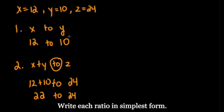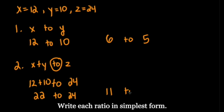In ratios, although you might get your answer, it doesn't mean it's in simplest form. For number one, both 12 and 10 can be divided by 2. 12 divided by 2 is 6, and 10 divided by 2 is 5, so our final answer is 6 to 5. For the second one, both 22 and 24 can be divided by 2. 22 divided by 2 is 11, and 24 divided by 2 is 12, so our final answer is 11 to 12.